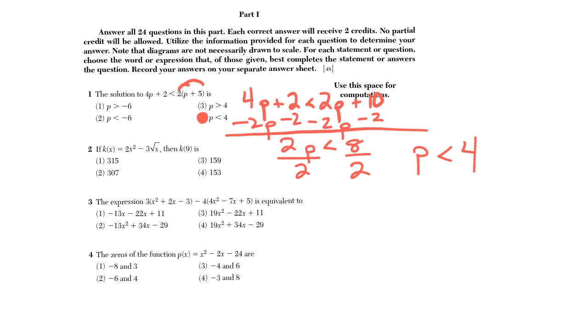For 2, we have a function notation question. You kind of have to understand what this is asking. When it says k of 9, that's basically saying plug in or let x equal 9. I would utilize my calculator here personally, so type in the function 2x squared minus 3 square root x.